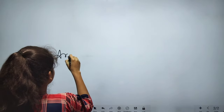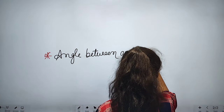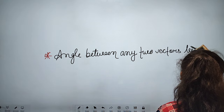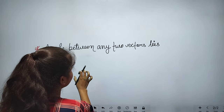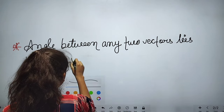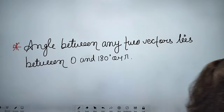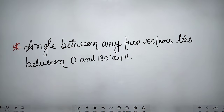Now, the angle between any two vectors lies between 0 and 180 degrees. This is an important point — the angle between any two vectors lies between 0 to 180 degrees, or we can say 0 to pi.